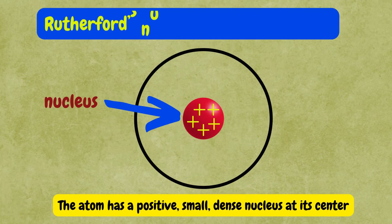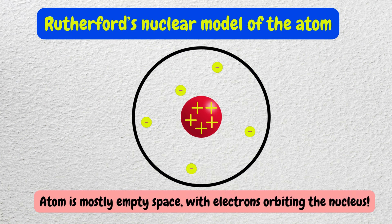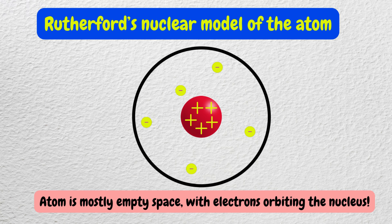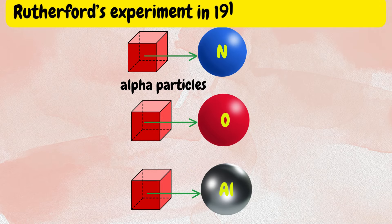This observation led Rutherford to conclude that the positive charge of an atom is concentrated in a small dense nucleus at its center. His nuclear model of the atom portrayed atoms as mostly empty space with electrons orbiting the nucleus.